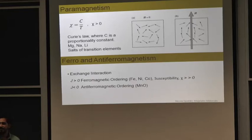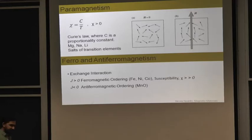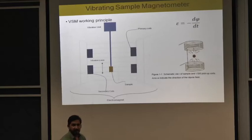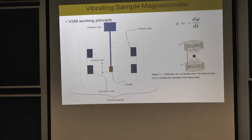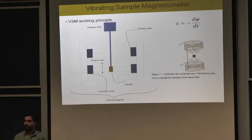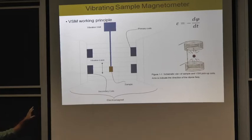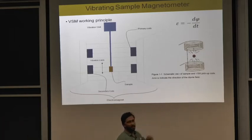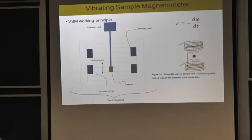Now we can think of real systems which can measure the properties of these materials — such as susceptibility and magnetization. One such system is the vibrating sample magnetometer (VSM). The idea was put forward by S. Foner in 1955. The idea is quite simple: we have electromagnets which provide a uniform magnetic field. The four blue boxes represent the primary coil and secondary coil, also known as the sensing coil. The vibration unit above moves the sample inside the magnetic field in the vertical direction.